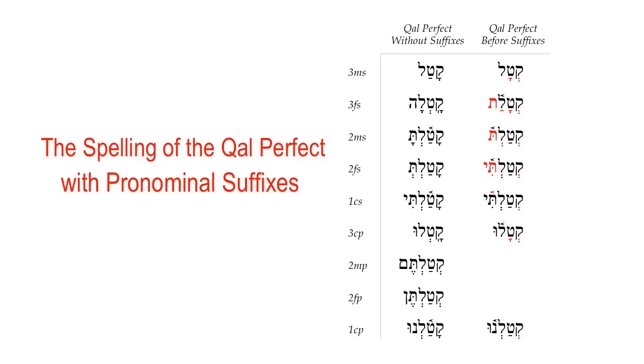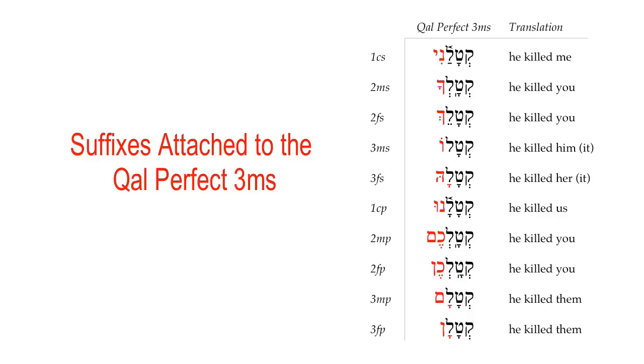But they're still important forms to memorize. The forms that appear most frequently with pronominal suffixes are the 3MS, the 3CP, and the 1CS — occurring over 300 times, over 200 times, and almost 200 times respectively. Those forms are pretty easy to identify in context. In terms of frequency, those are the forms you want to get down. Interestingly, that which is least common is actually the most irregular, which kind of violates our principle that what is most common is most irregular.